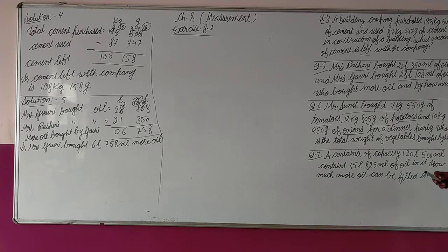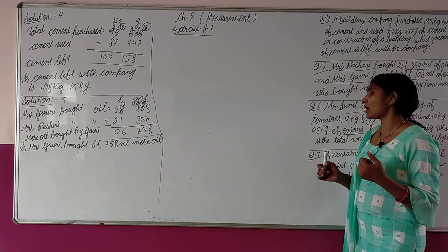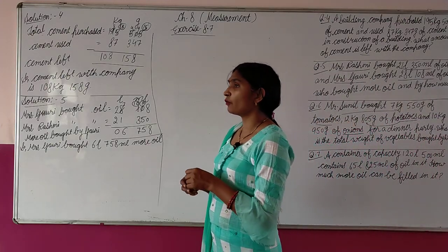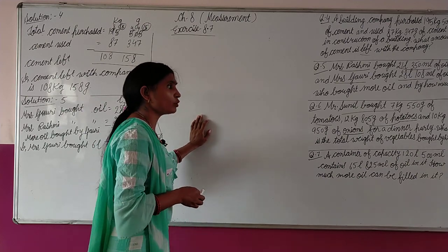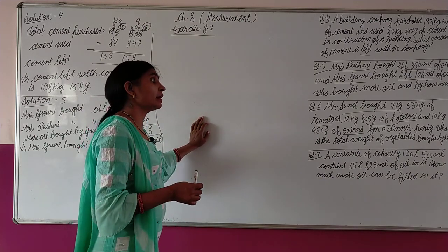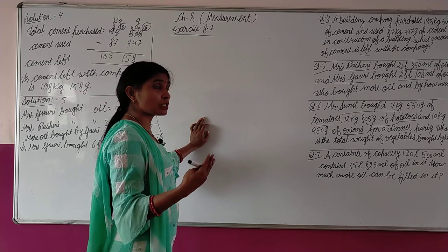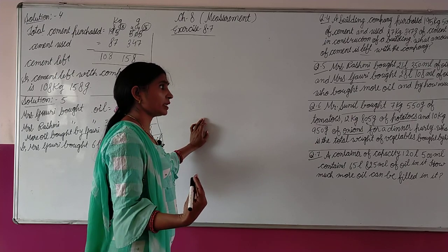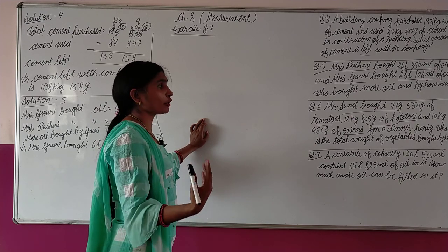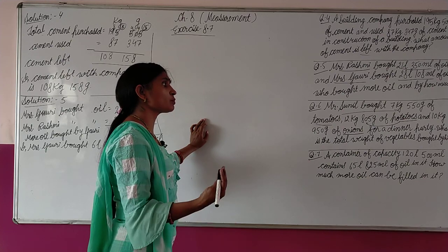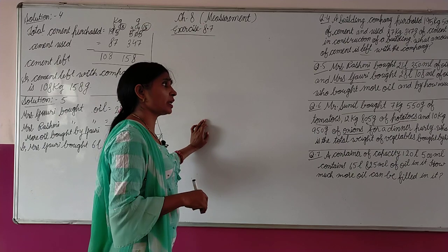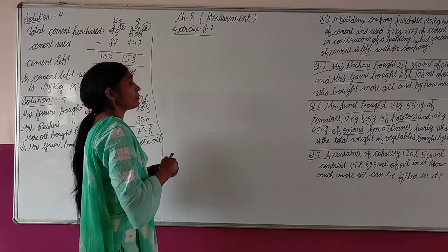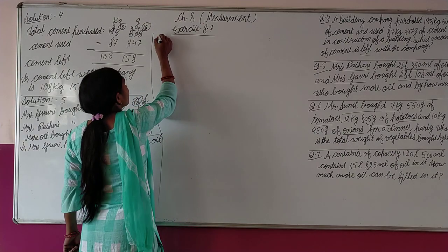We have to find the total weight of tomatoes, potatoes, and onions. We can write the statement as: weight of tomatoes, weight of potatoes, weight of onions — or Mr. Sunil bought tomatoes, Mr. Sunil bought potatoes, Mr. Sunil bought onion. Any way you can write the statement.